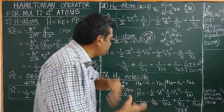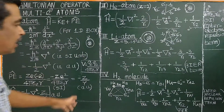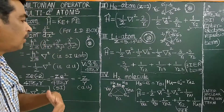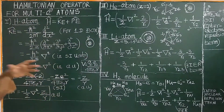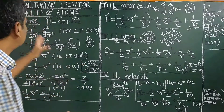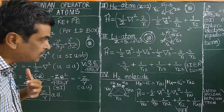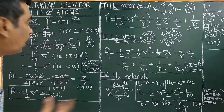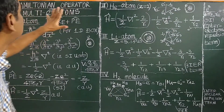For molecules, the wave functions obtained by solving the Schrödinger wave equation are called molecular orbitals. So we are able to obtain the energies, energy levels, and also the atomic orbitals and molecular orbitals. This is very, very important.